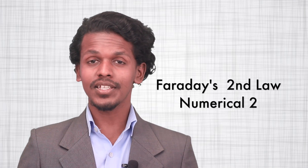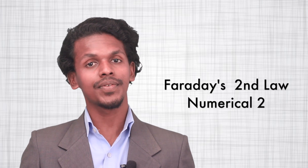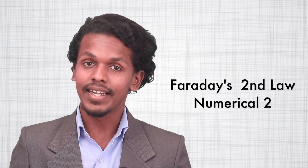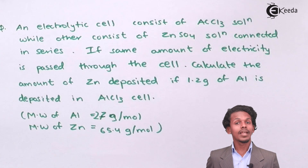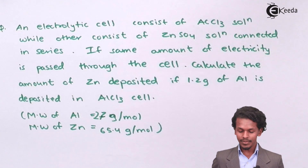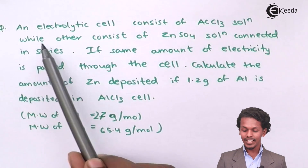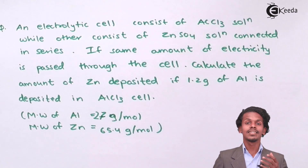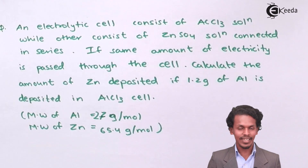Hello friends. In the last lecture we studied a numerical based on Faraday's First Law. Now we are going to do the same kind of numerical but with different data. The question says that an electrolytic cell consists of AlCl3 solution while the other consists of ZnSO4 solution, and both are connected in series. Since the keyword is 'in series,' we are talking about Faraday's Second Law of electrolysis.